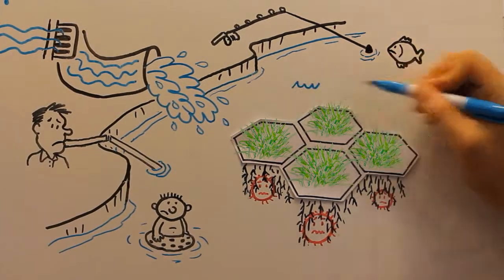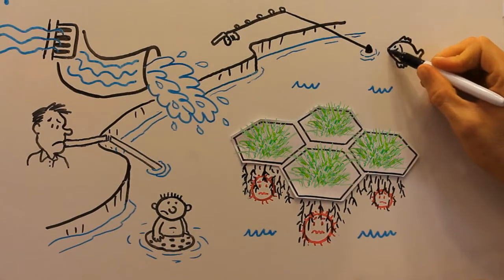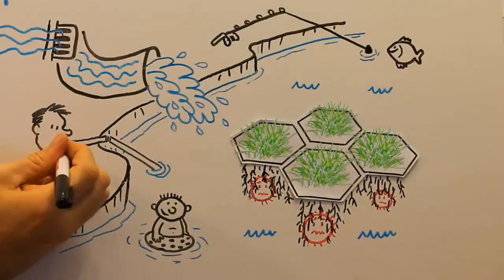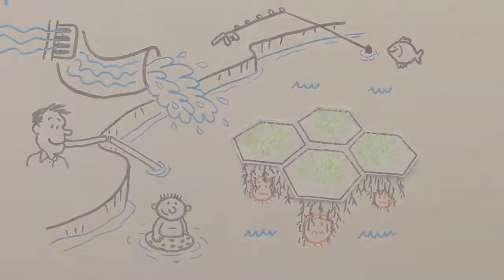The result is cleaner and safer water for Joe, his family, and all of the residents of the city of Kawartha Lakes. For more information about floating wetlands, visit www.rain.com.